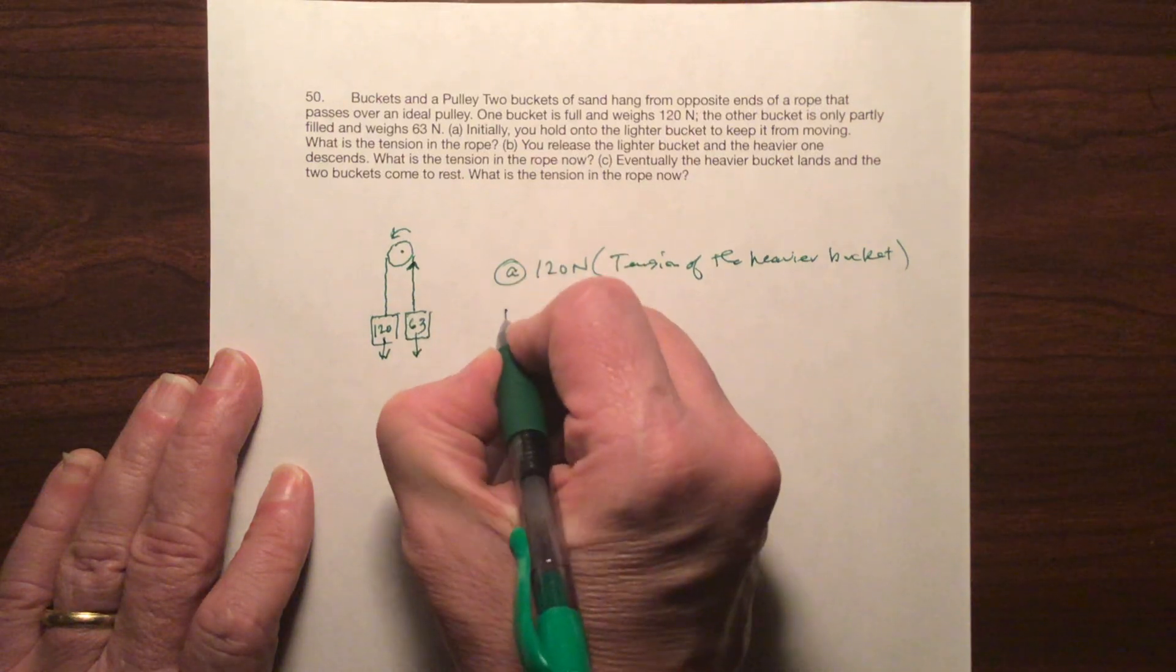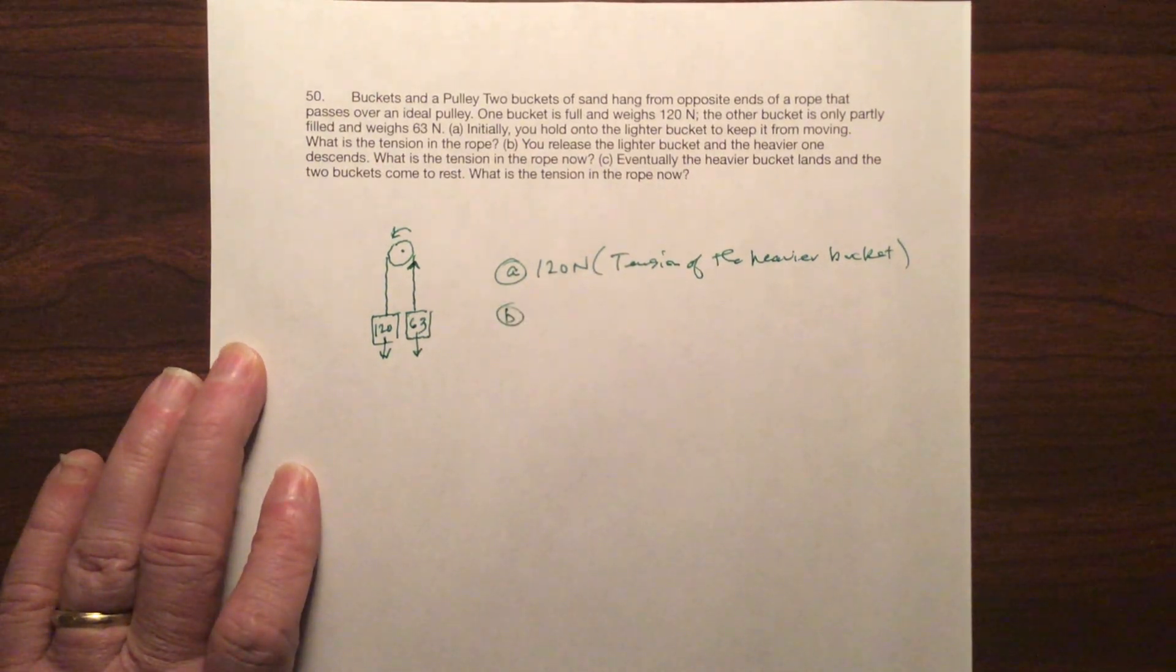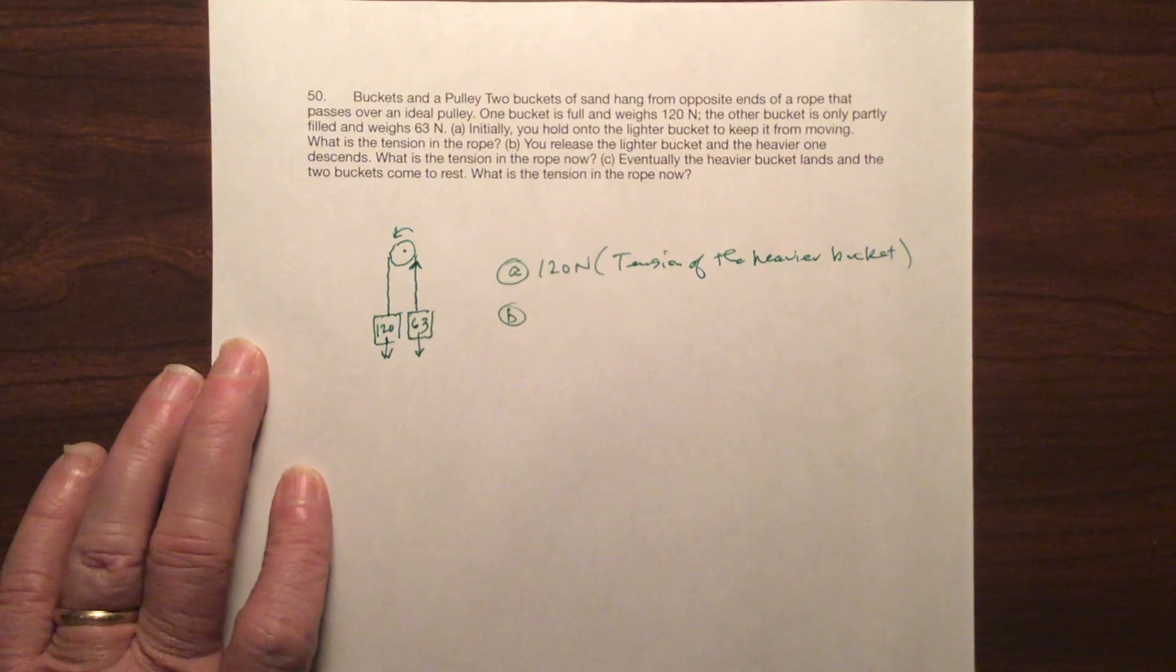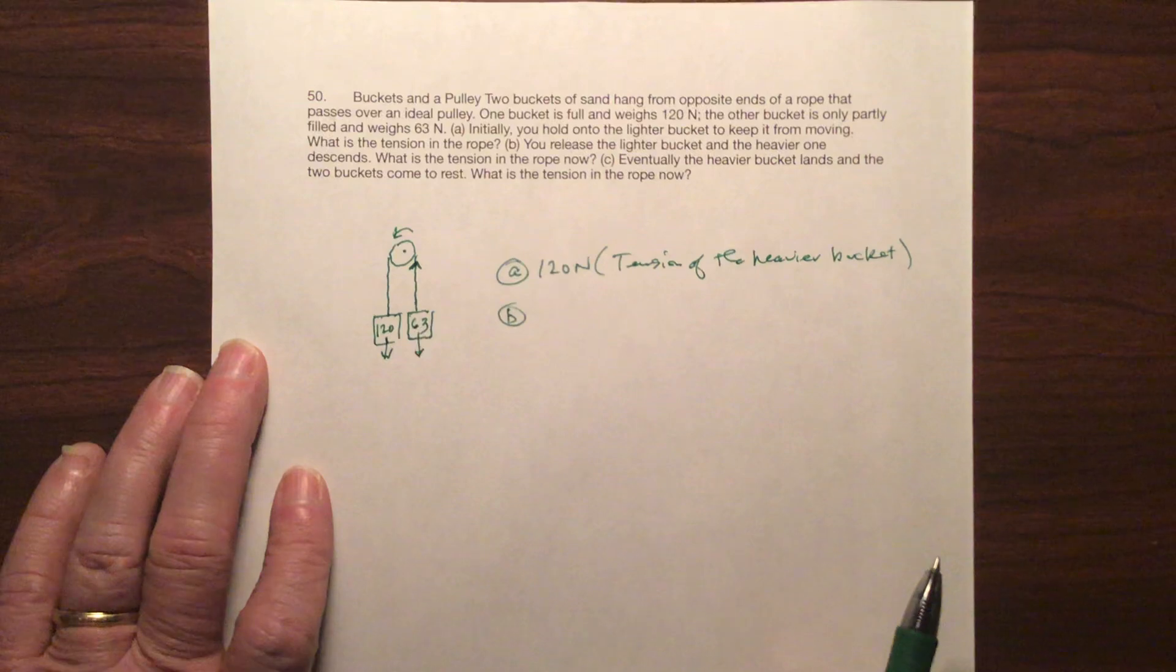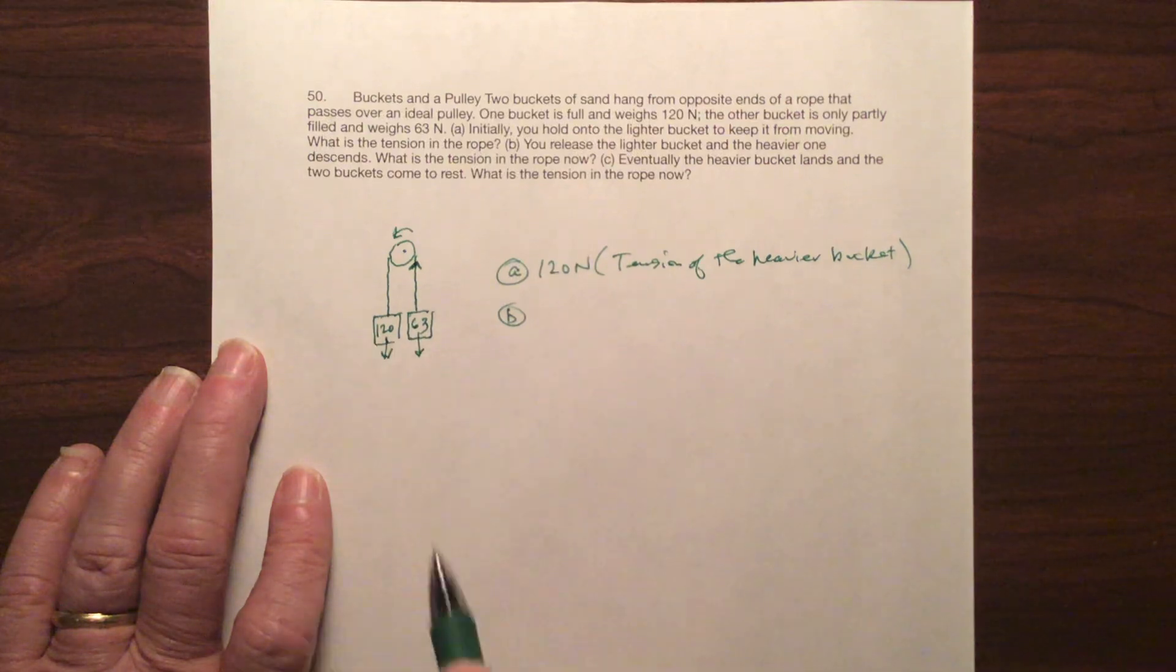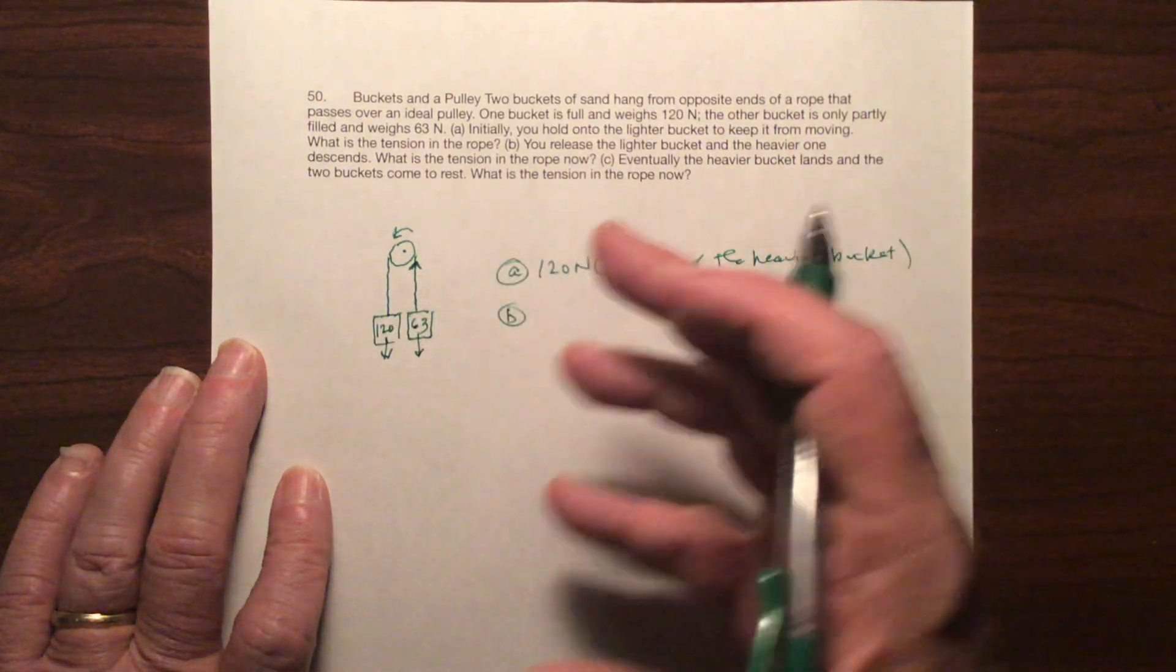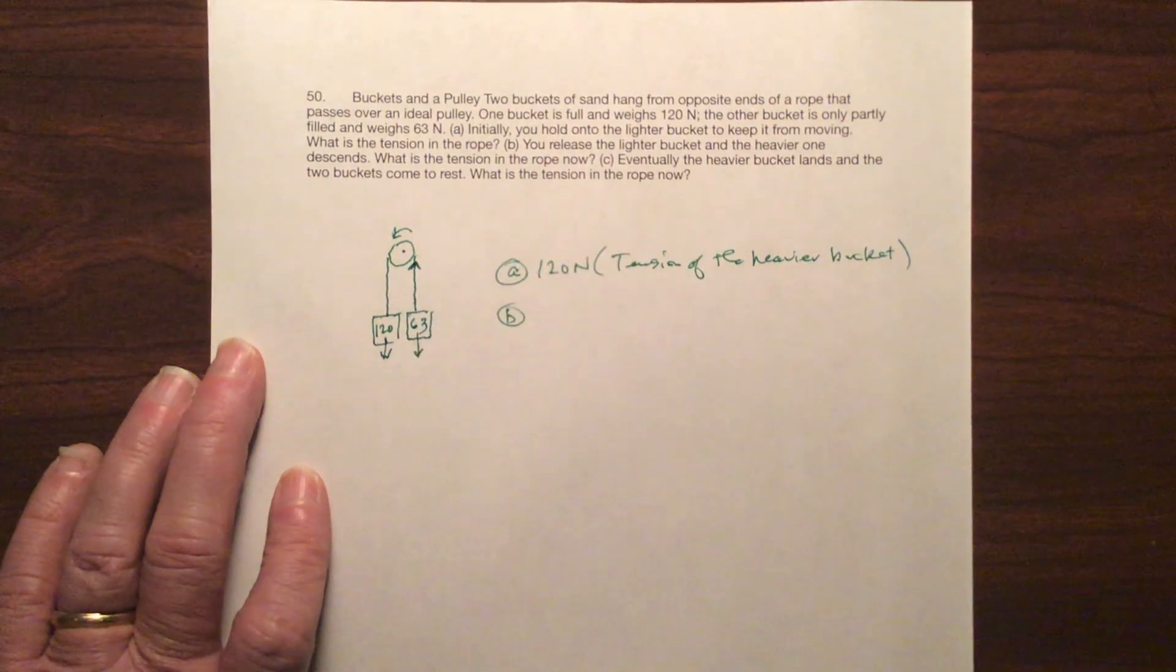What's B say? You release the lighter bucket and the heavier one descends. What's the tension in the rope now? Well, as this is moving, this is slackening the rope. This is moving so it's not going to stay as tight as it was because this is moving out of the way. And so it would be almost like catching a baseball and moving your hand. It reduces the amount of impact. So as this is dropping, this tension is going to slack.